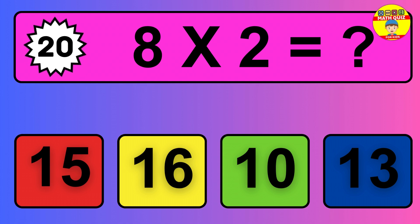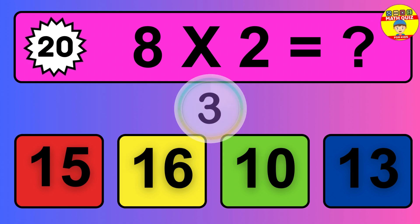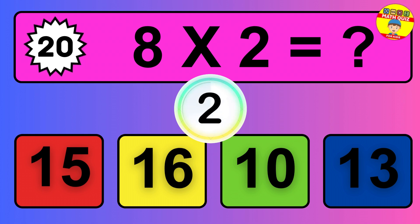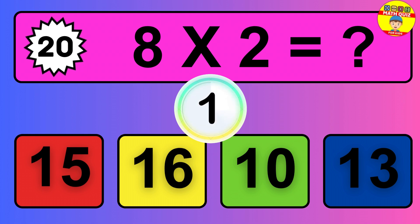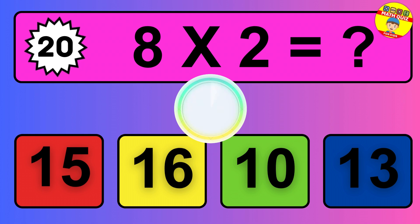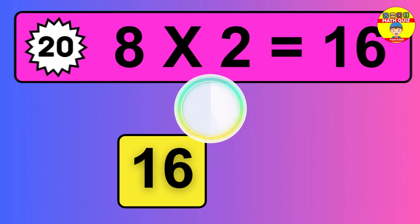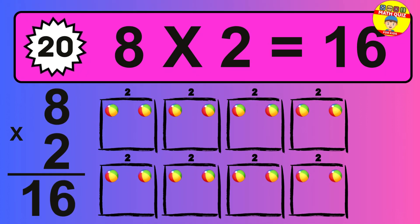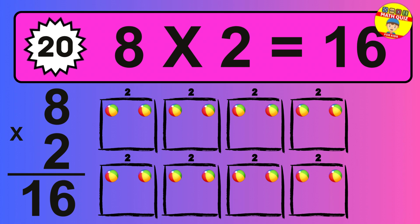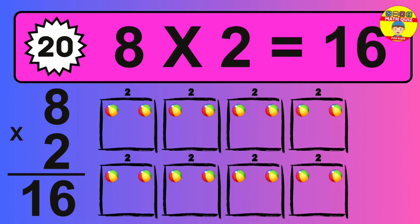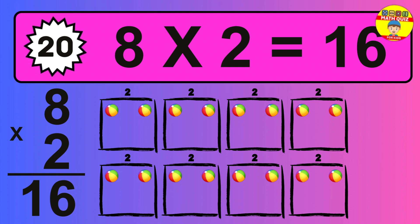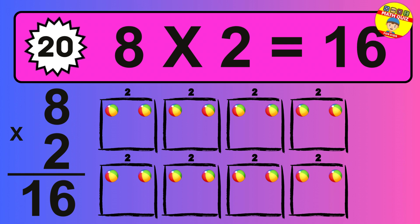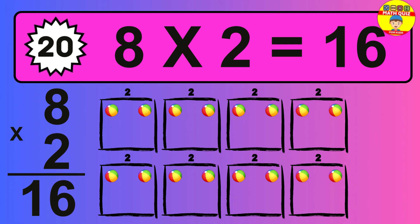Question 20. 8 times 2 equals what? So the answer is 8 times 2 is 16. To calculate, we have 8 groups with 2 balls each one. So how many balls do we have? 16 balls.